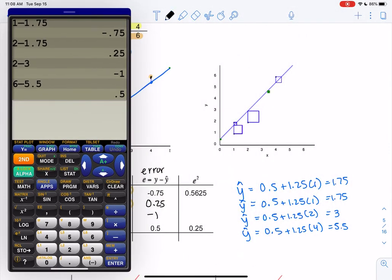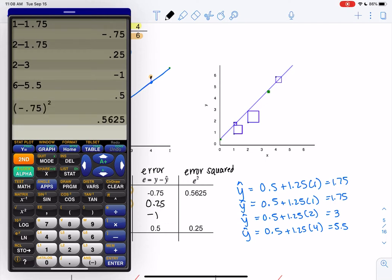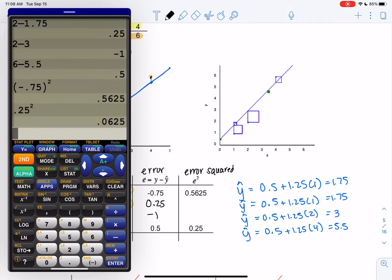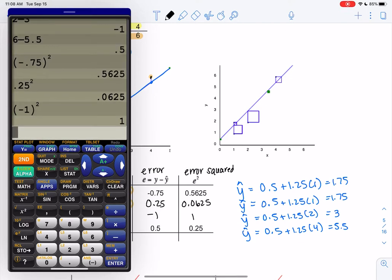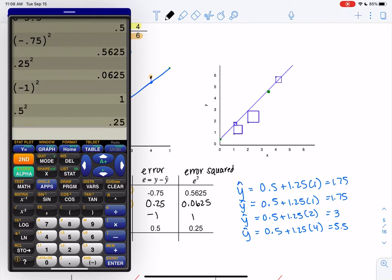So this is just the error squared in the last column. So make sure you put parentheses on those negative numbers, negative 0.75 squared. Your answer should be positive. If it's not, the negative sign is an issue. 0.25 squared. No negative sign, so parentheses don't matter too much. 0.0625. Negative 1 squared is 1. And then 0.5 squared is 0.25. So these are measuring squared errors. If you're visual, it's measuring these boxes, the size of the boxes.